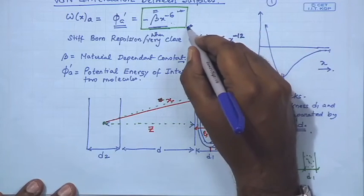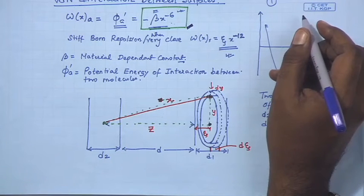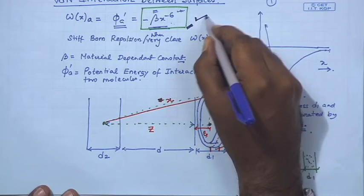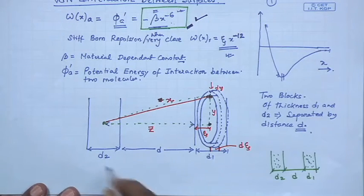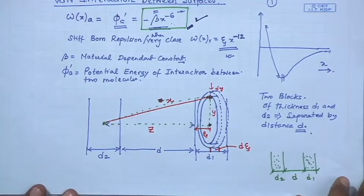We decided to look in more detail into the expression for van der Waals interaction. We will do a quick recapitulation. We started by looking at the normal 6-12 potential — the attractive part of the 6-12 potential, which is the pure van der Waals attraction between two molecules — with a scaling of x to the power minus 6. We then considered the interaction between two thin blocks of materials one and two, of thicknesses d1 and d2, separated by a distance d.